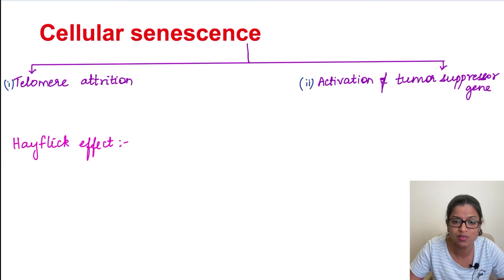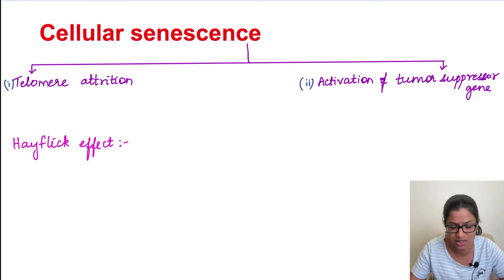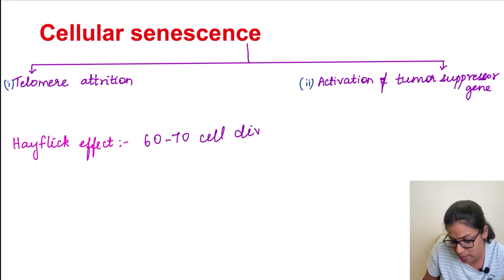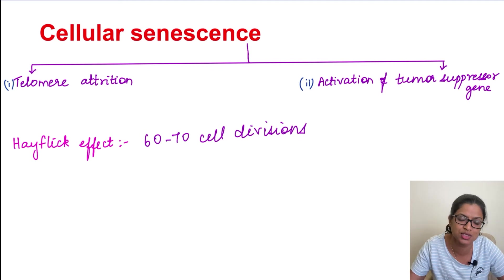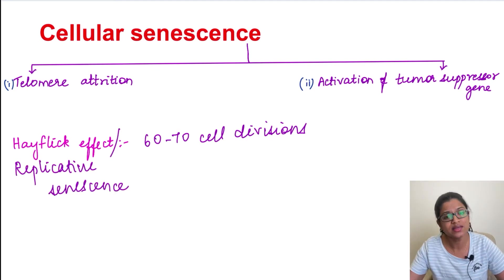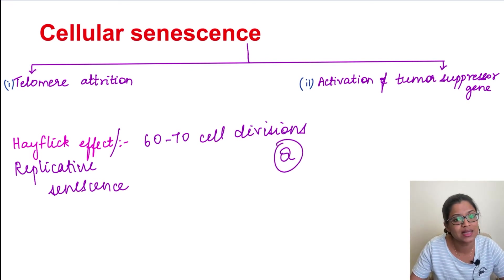Moving on to the second mechanism: cellular senescence. It literally means that the cells are aging. The mechanism for cellular senescence will be discussed under two headings: telomere attrition and activation of tumor suppressor genes. Normally, a cell can divide only up to a particular limit, which is 60 to 70 cell divisions, after which they undergo a state of non-replicability. This is called the Hayflick limit, also called replicative senescence. Why can't cells divide beyond this limit? Because of telomere attrition.